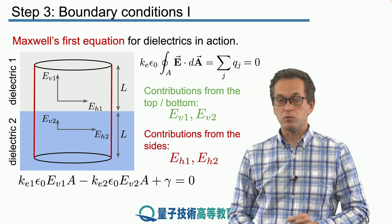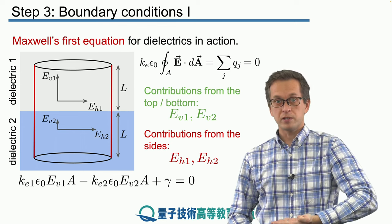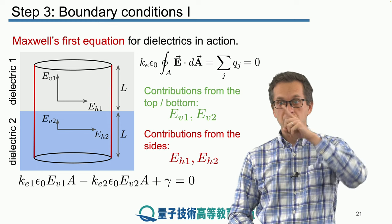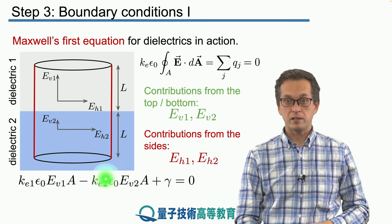Minus Ke2. Why is it minus? Because now we are considering the bottom of the cylinder, meaning the vector dA is pointing in the opposite direction, resulting in this minus in here.